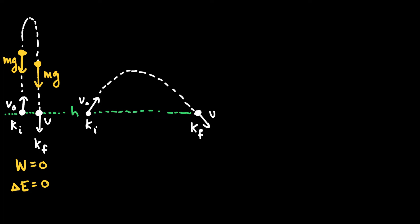In this case as well, the gravitational force does negative work on the ball to slow it down as it's going up. Once it gets past the peak of its trajectory, the gravitational force, which still points down, does positive work to speed the ball up. So between its initial and final positions, once again, the work done by the gravitational force is zero, and the change in energy is zero.